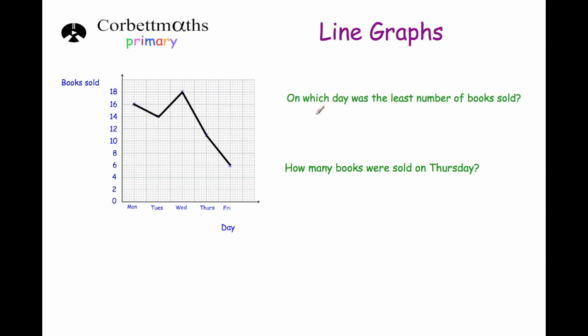The next one says: on which day of the week was the least number of books sold? The lowest point on the graph was on Friday, which was six books. But the question asks for the day, so the answer is Friday.